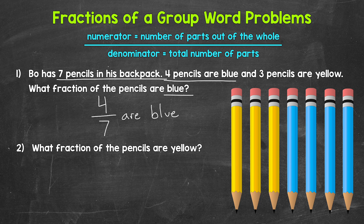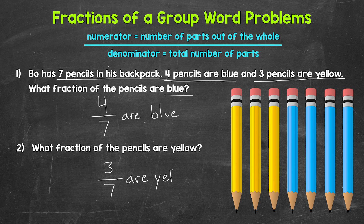Moving on to number two: what fraction of the pencils are yellow? Let's start with the denominator, which is going to be seven again. Now we need the numerator — the number of yellow pencils. Bo has three pencils that are yellow, so three is our numerator. Three out of the seven pencils are yellow, so our fraction is three sevenths.